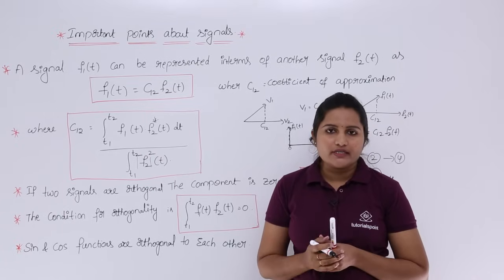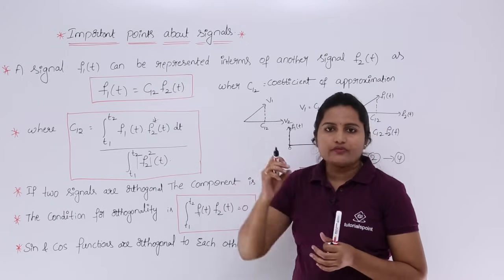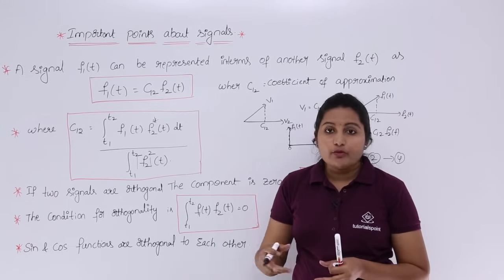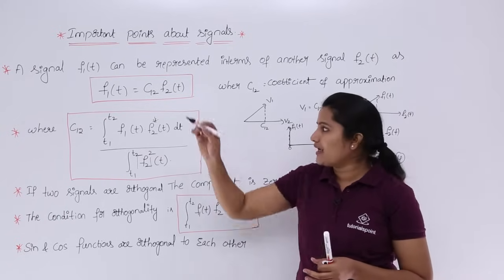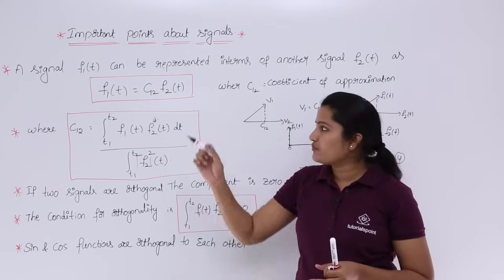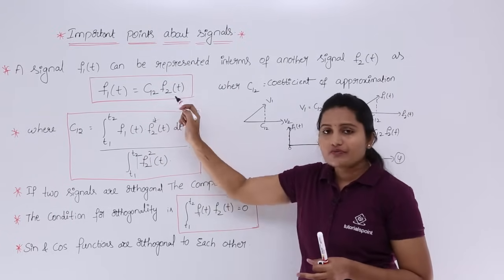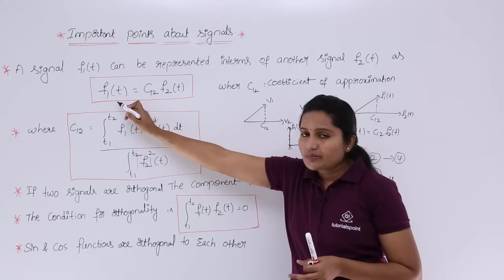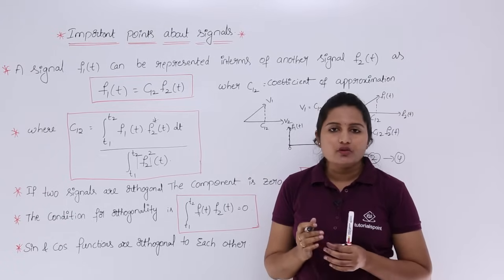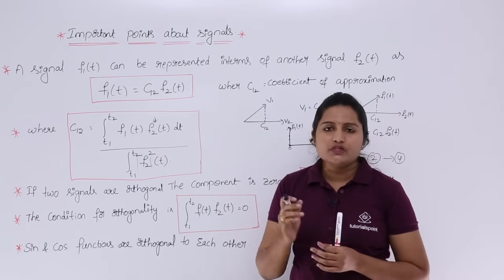These are very important points in signal basics. Knowing how to approximate one signal with another is foundational — Fourier series representation is derived from this theory, and this formula will be recalled in the introduction to Fourier series. The coefficient of approximation equation equals zero when two signals are orthogonal.